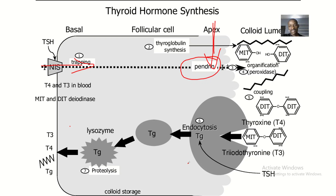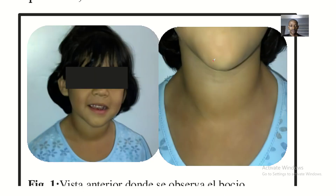Pendred Syndrome is basically the inactivation of the complex that oversees the trapping of iodine from the apex of the cell into the cell, so that conjugation and organification can occur and thyroid hormone is formed. Typically, there is goiter and hearing loss.